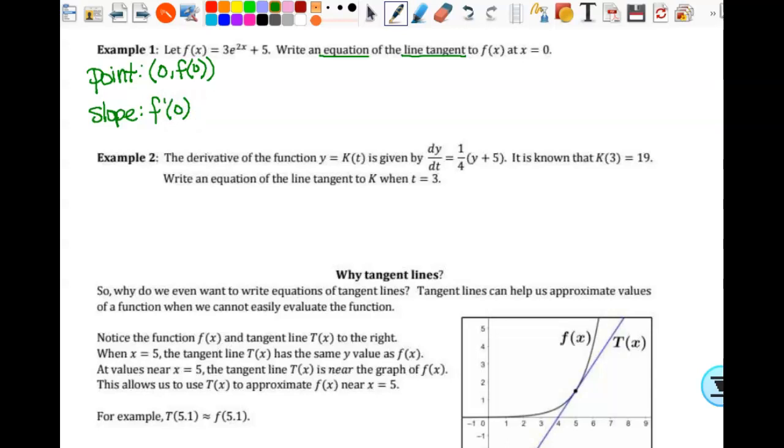So it says that x equals 0, so my point is at (0, f(0)). And my slope is f'(0). Those are the things that I'm looking for. So I can come in here and do f(0). So f(0) is equal to 3 times e to the 2 times 0 plus 5. Well, what's 2 times 0? 0. So e to the 0 power is 1. So 3 times 1 is 3 plus 5 is 8.